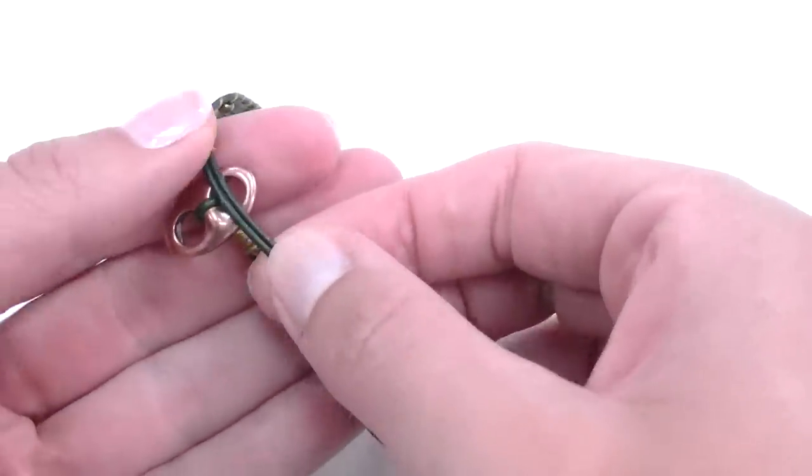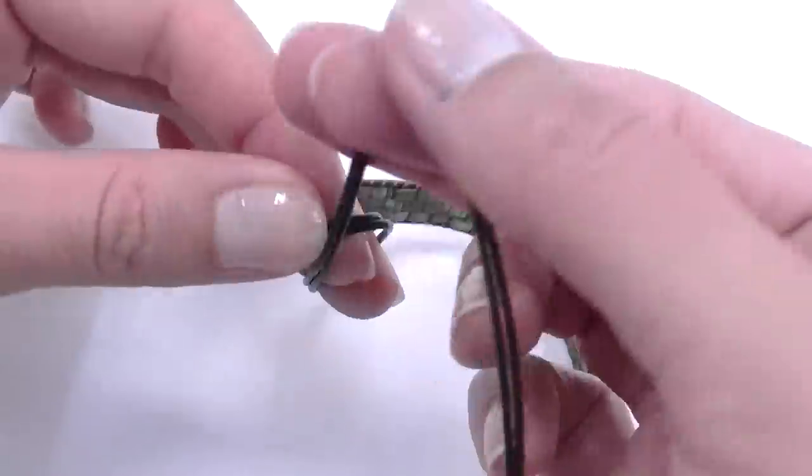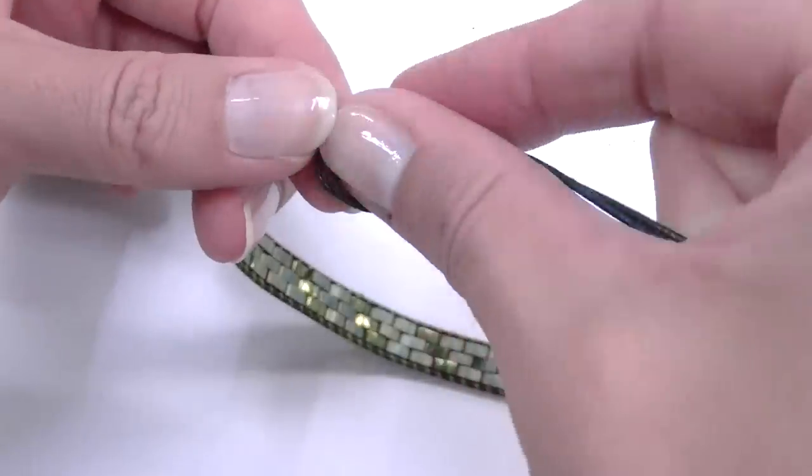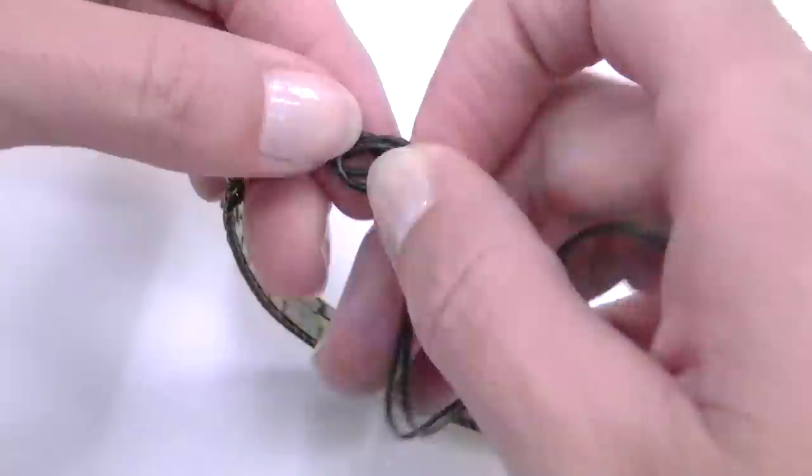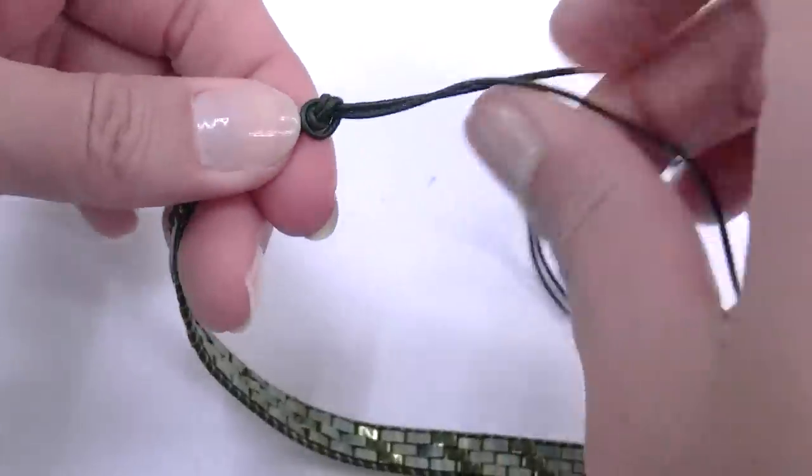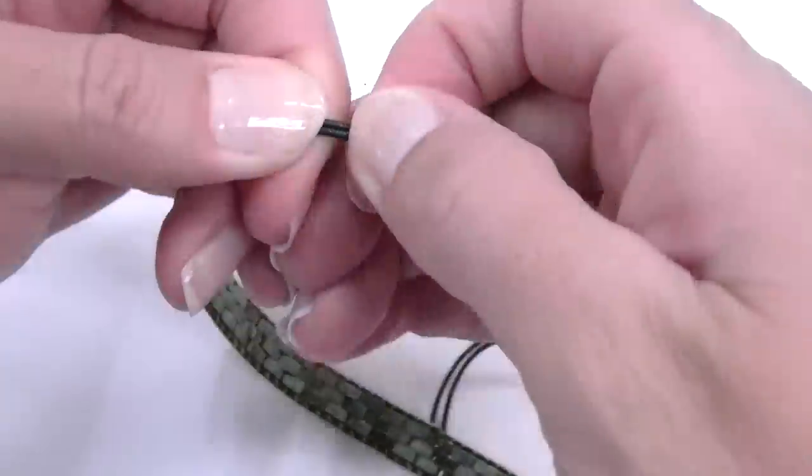And lastly, make an overhand knot joining both cords together, but leave a distance between the last beads and the knot enough to let the calabrote pass in it, because the calabrote is the closure of our bracelet.